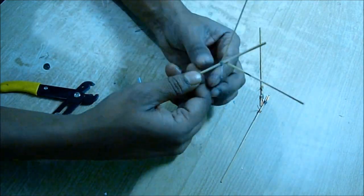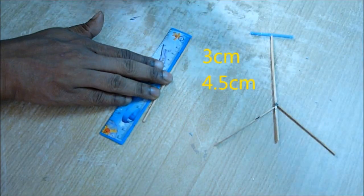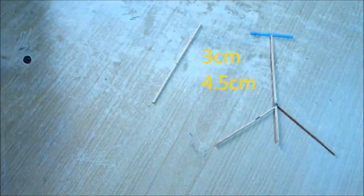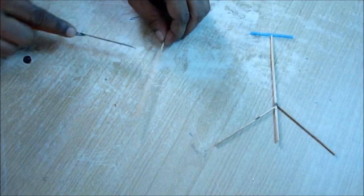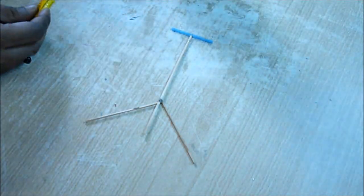Now cut a three centimeter long and a four and a half centimeter long stick. Glue the three centimeter long stick about one centimeter away from the front and tie it very tightly with strings. You can put extra glue.